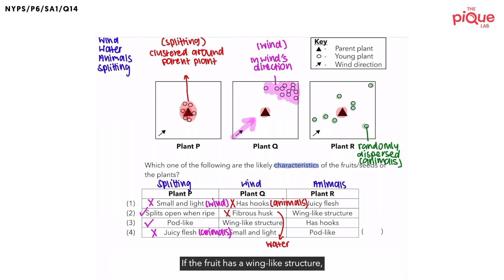If the fruit has a wing-like structure, means its dispersal method would be by wind. The last option tells us that the fruit, or plant Q, is also small and light. Is this a characteristic of fruits that are dispersed by wind? Yes. This allows the wind to easily carry the fruit or the seeds away from the parent plant.